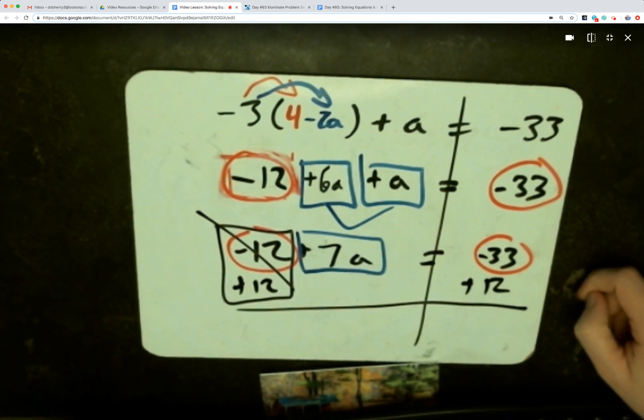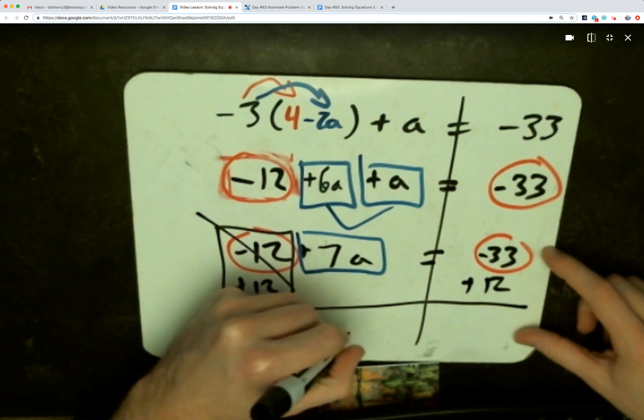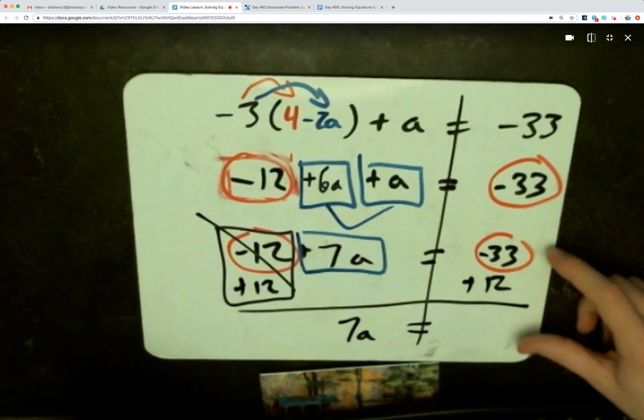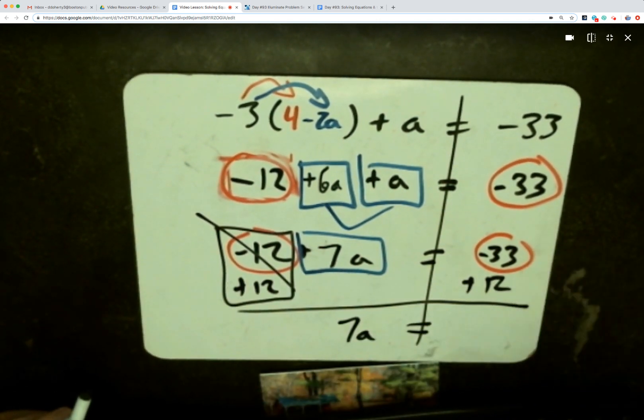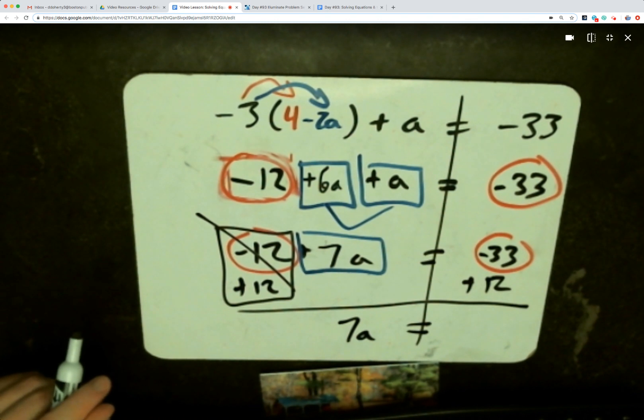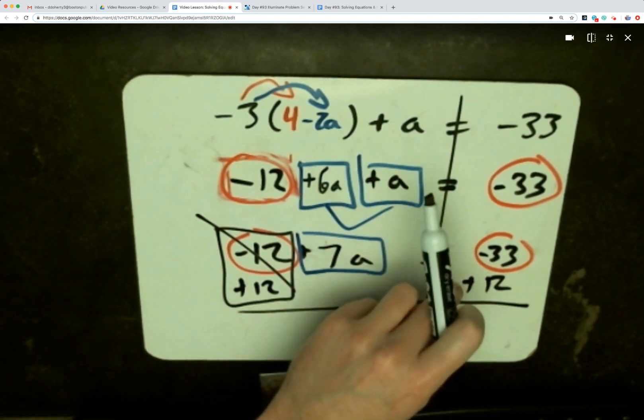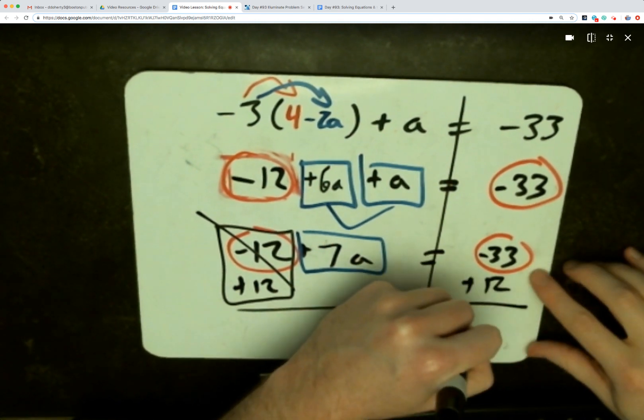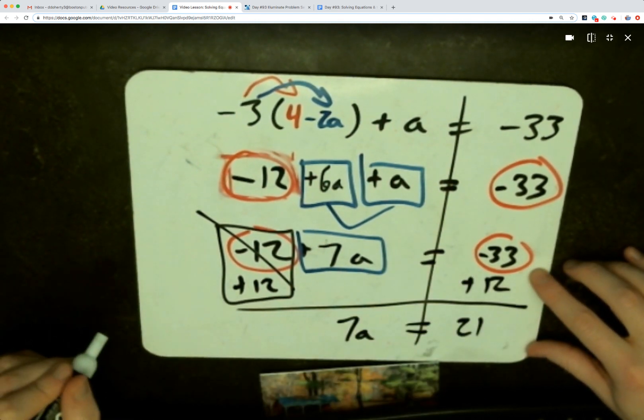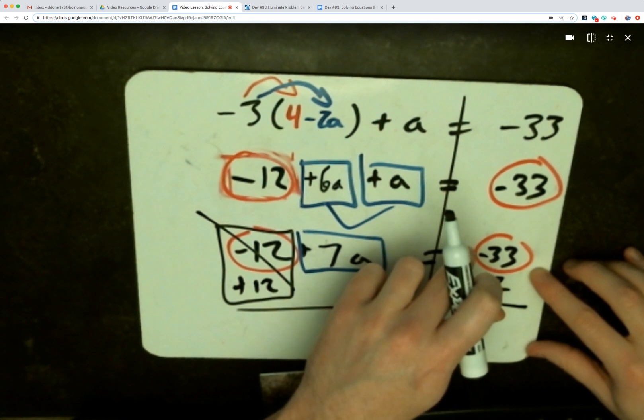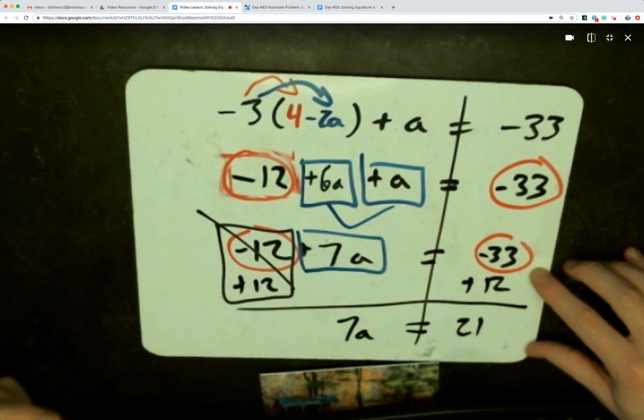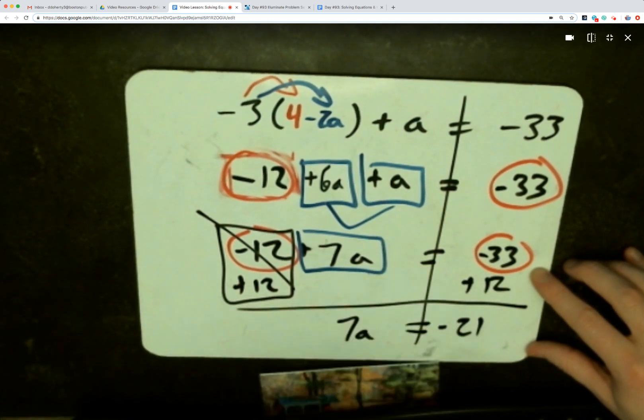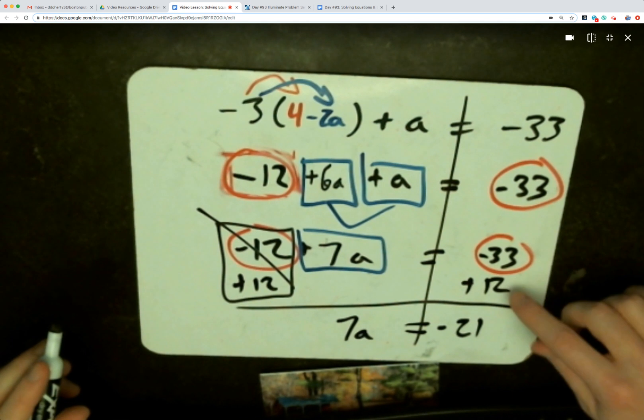7a comes down, equals negative 33 plus 12. A lot of ways to do this. My brain sees a positive term combined with a negative, so I'm going to do some subtraction. 33 minus 12 leaves me with 21, but in this case the negative 33 has a greater absolute value than the positive 12, so I'm going to have negative 21 units left over after I add 12.